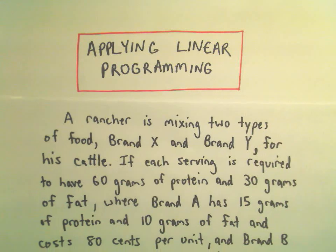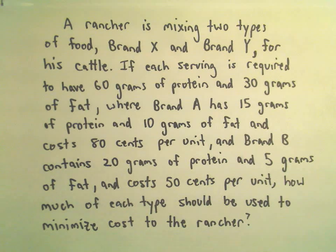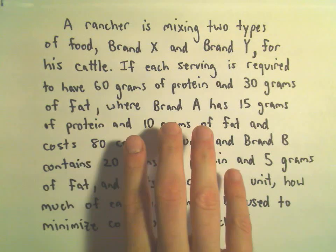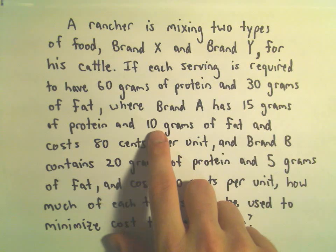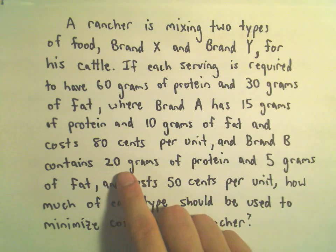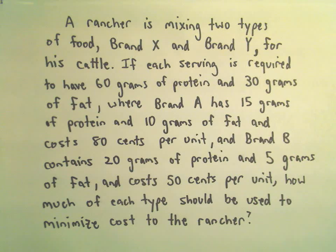One more example of a word problem using linear programming to find a minimum. Suppose we've got a rancher with two types of food for his cattle: brand X and brand Y. Each serving must have 60 grams of protein and 30 grams of fat. Brand A has 15 grams of protein and 10 grams of fat, costing 80 cents per unit. Brand B has 20 grams of protein and 5 grams of fat, costing 50 cents per unit. We want to know how much of each type of food the rancher needs to minimize costs.